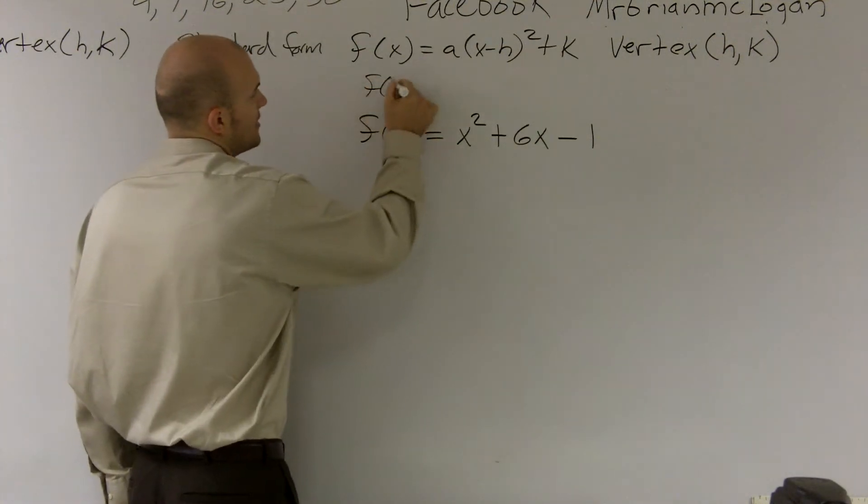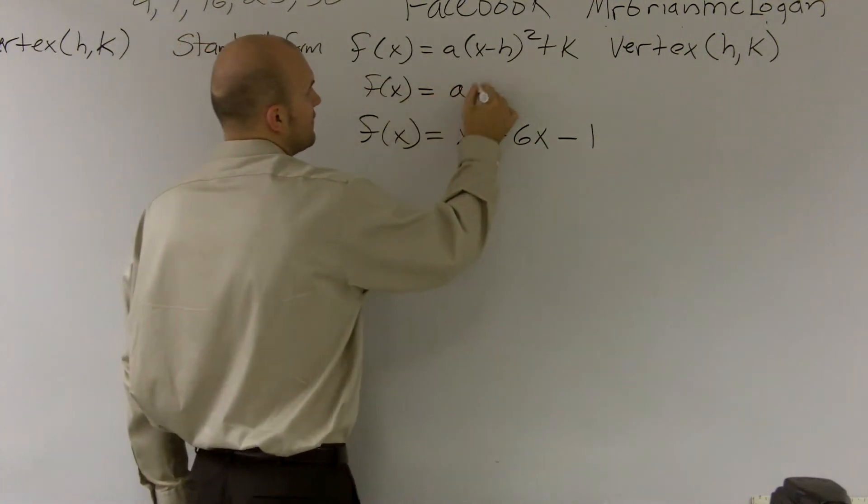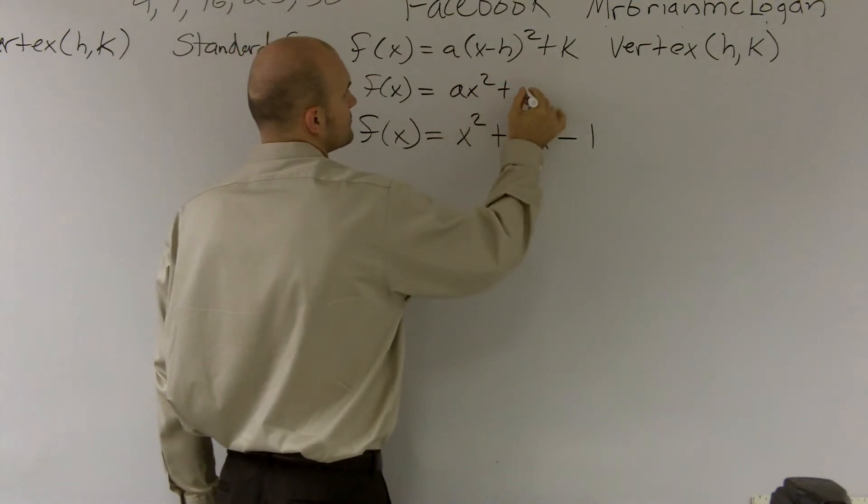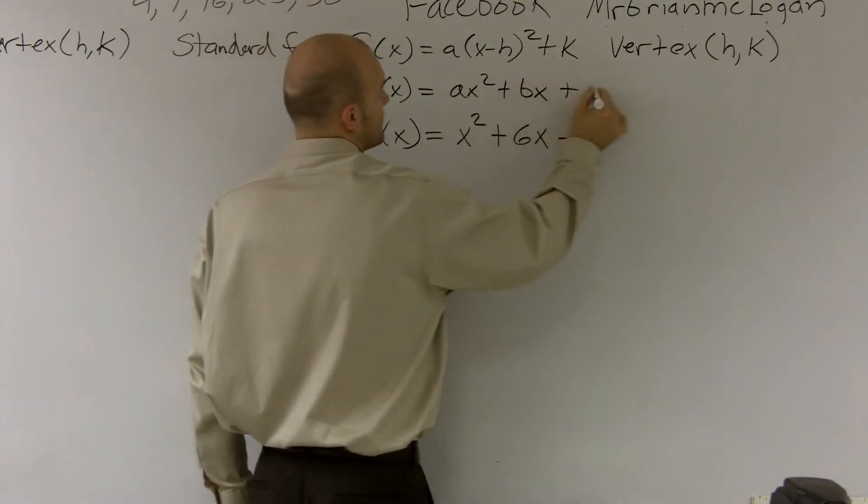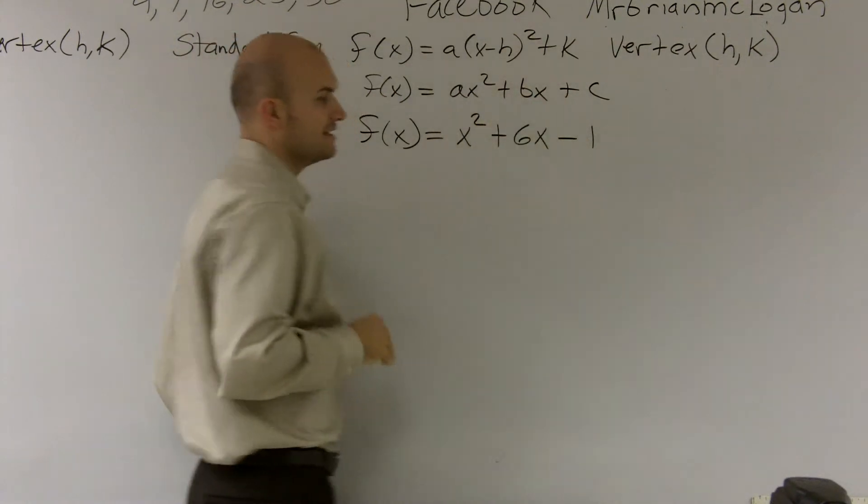The next thing you need to remember is our quadratic form of a function. We have ax squared plus bx plus c.